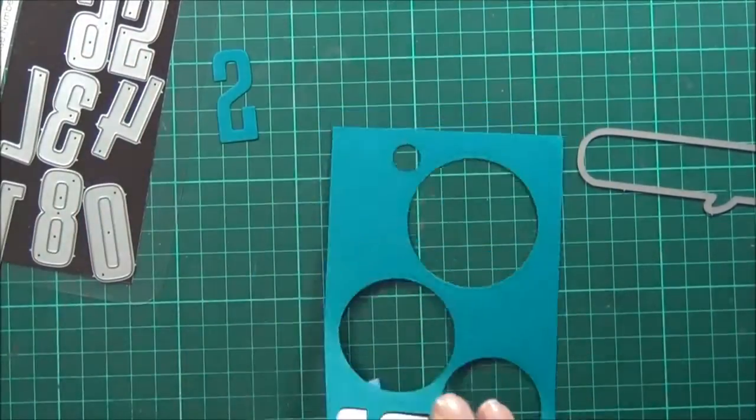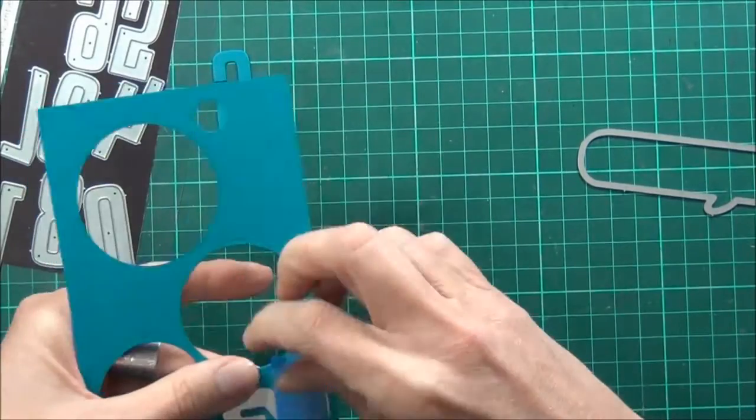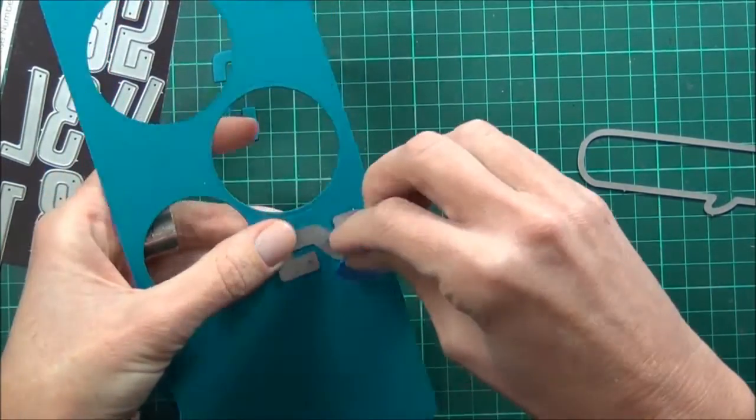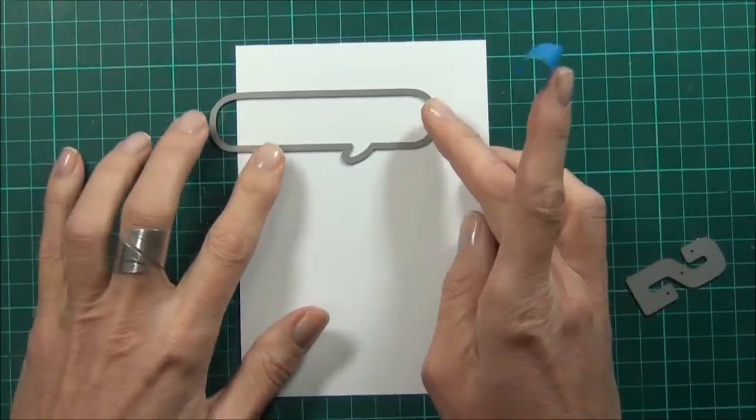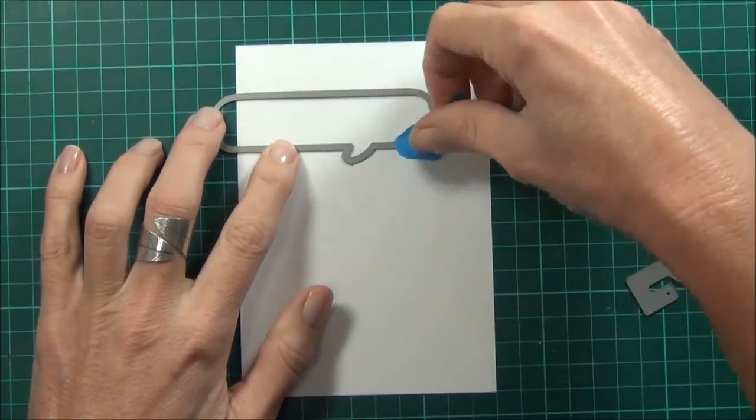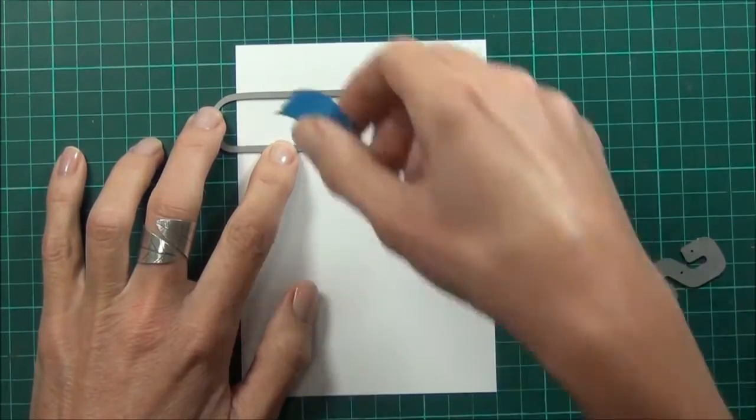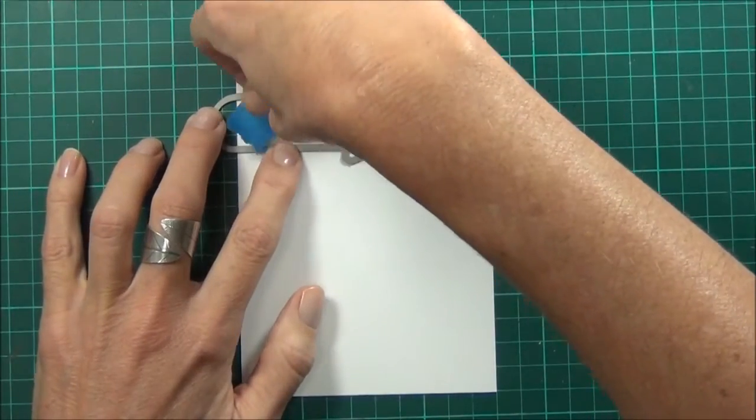I've also die cut a dark blue teal color number two from My Favorite Things High Rise Number set. I've got a piece of plain white cardstock cut the same size as the front panel of my card.